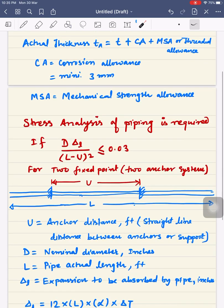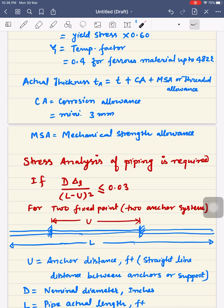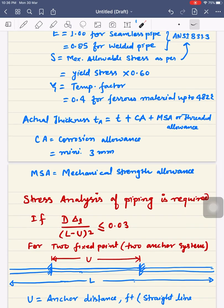MSA is mechanical strength allowance. So now before talking about stress analysis of piping, you know the thickness of the pipe. Based on this calculated thickness value, you can check in ASME ANSI B31.3 the schedule required for the piping.